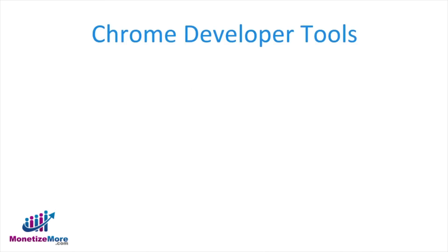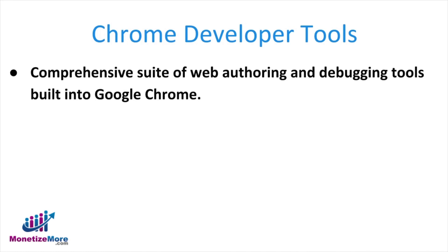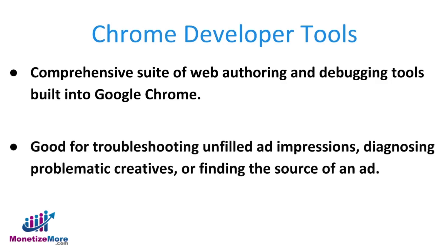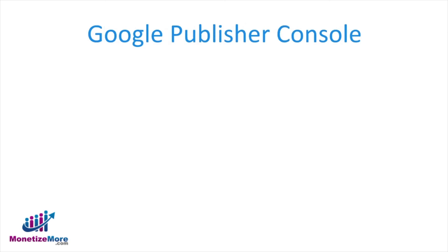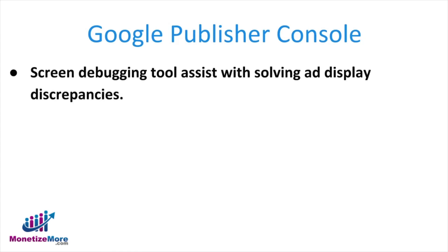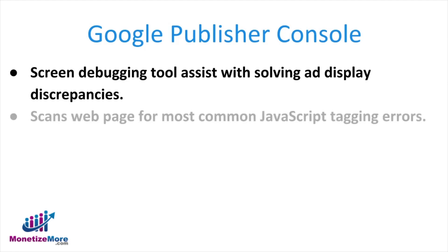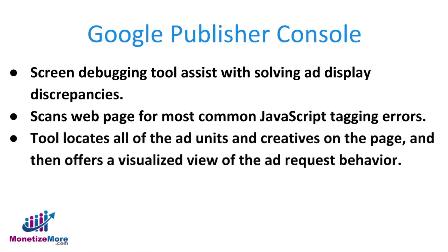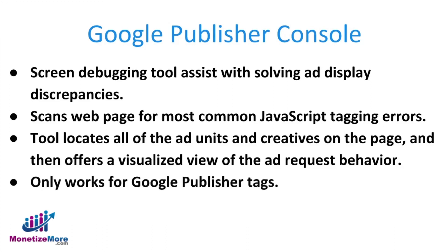Next on our list are the Chrome Developer Tools, a comprehensive suite for web authoring and diagnosing problematic creatives or finding the source of an ad. Chrome Developer Tools are definitely worth incorporating into your QA workflow. And last but not least, we also suggest the Google Publisher Console tool. This is a screen debugging tool that assists with solving ad display discrepancies by scanning your web page for the most common JavaScript tagging errors. The console tool quickly locates all ad units and creatives on the page and then offers a visualized view of the ad request behavior. As with the Google Publisher Toolbar, the console only works for Google Publisher tags.